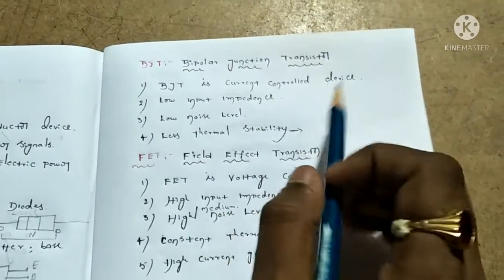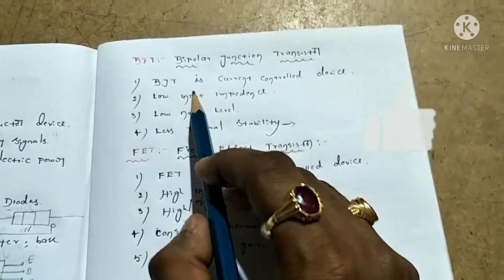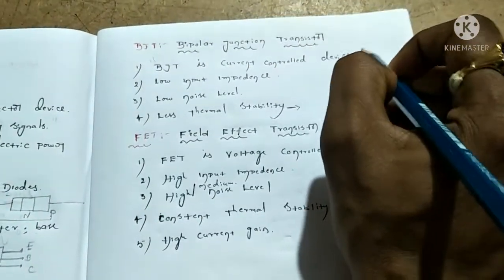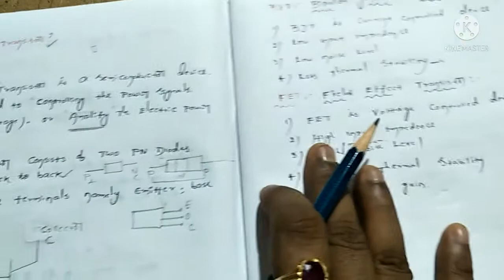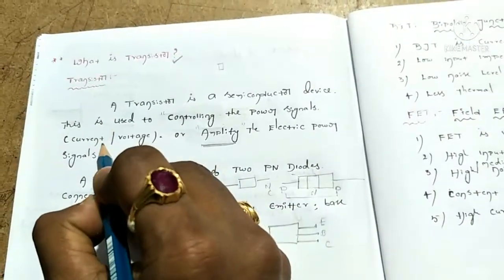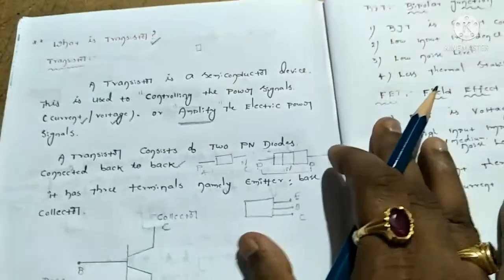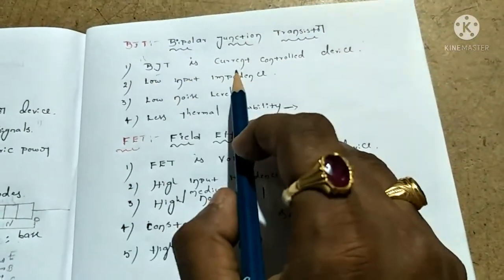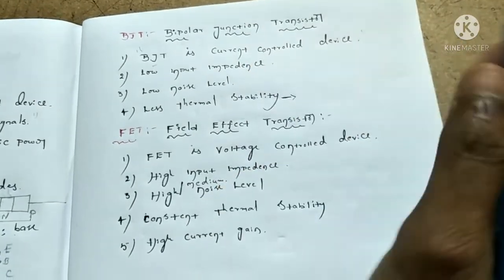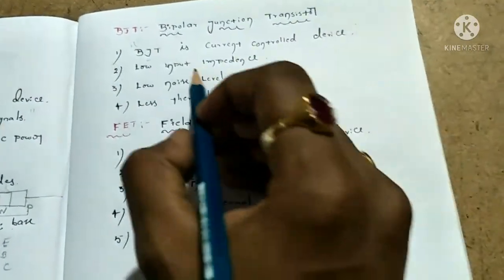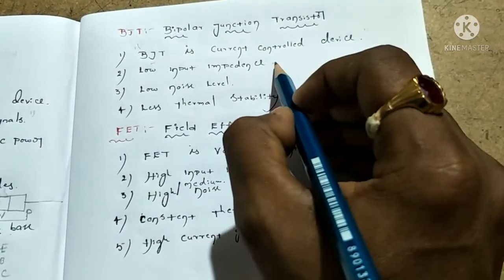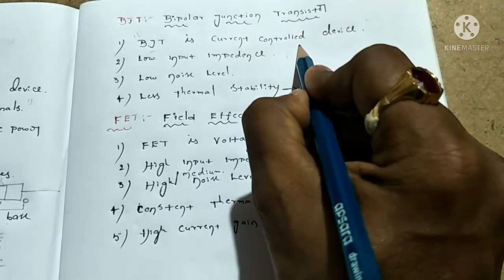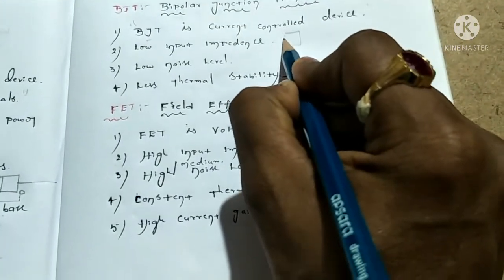BJT is Bipolar Junction Transistor. BJT is a Current Control Device. It has low impedance. It is a very important device. In BJT, the power signals — voltage and current — are controlled by current. BJT transistor is used as a Current Control Device.